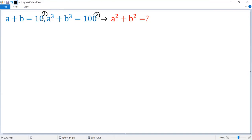To connect the first condition and the conclusion, let's square both sides. So we get a plus b squared equals 10 squared. Using perfect square formula, we get a squared plus b squared plus 2 times a times b equals 100. Let's denote that as 3.